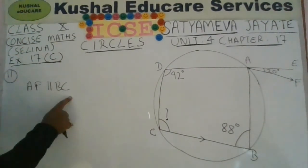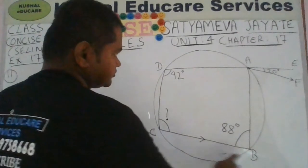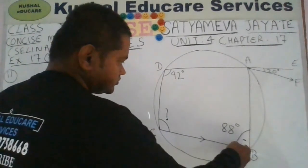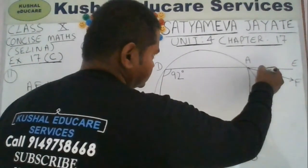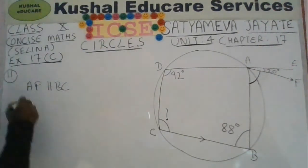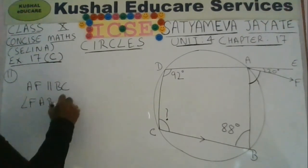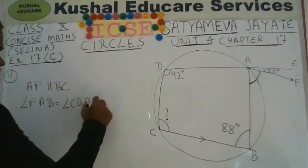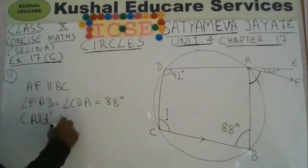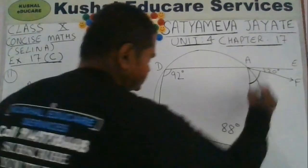The next important information given is that AF is parallel to BC, so that you can make use of the properties of parallel lines. If AF is parallel to BC and AB is a transversal, then you can easily find angle FAB, because angle FAB and angle CBA are alternate interior angles. Alternate interior angles are equal, so angle FAB will be 88 degrees.